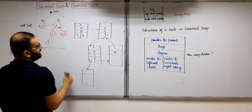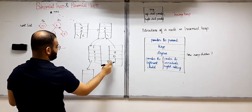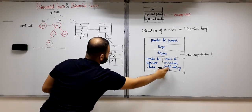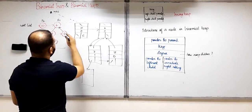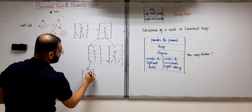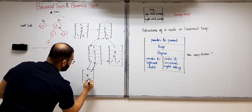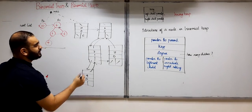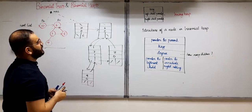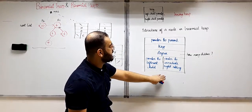Node 8 points to its parent 6. Key value is 8, degree is 0, pointer to leftmost child is null since there are no children, and there is no immediate right sibling so that is also null. Node 9 points to its parent 7, key value is 9, degree is 0, no leftmost child pointer so null, and no right sibling so null. This is how we actually represent a binomial heap — a node structure has all these components.